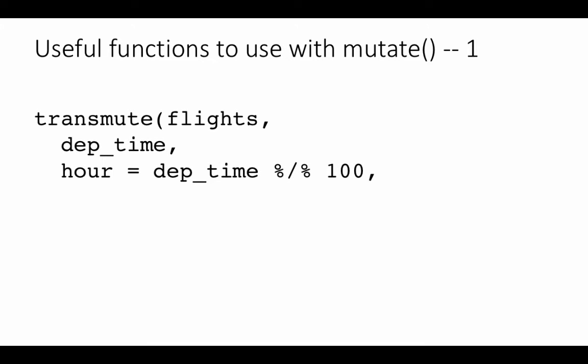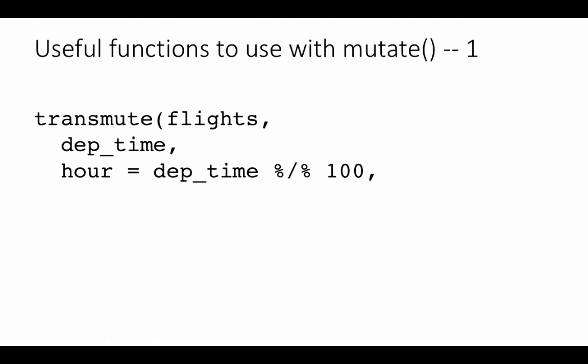For example, you can compute the quotient obtained when the departure time is divided by 100. The departure times in the data — if you look at 517, 630, and so on — are recorded in 24-hour clock format. So 510 really means 5:10 AM, and 630 really means 6:30 AM. The hours and minutes have been jammed together to form the time.